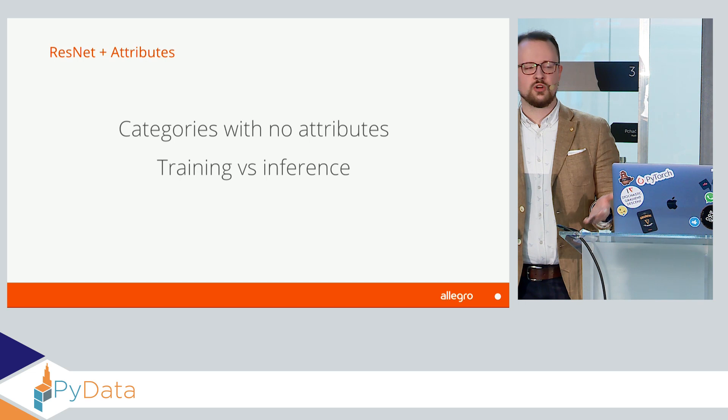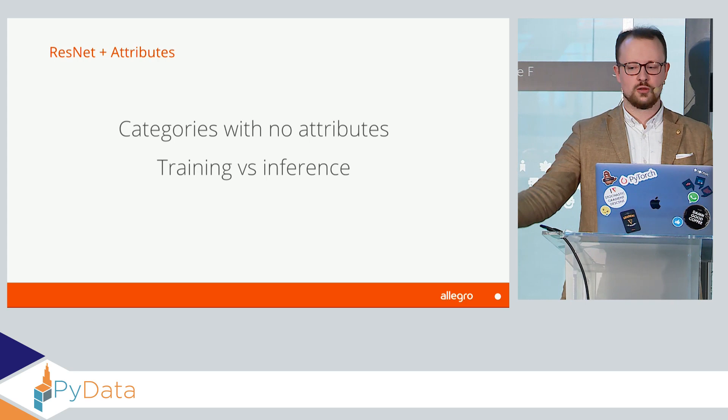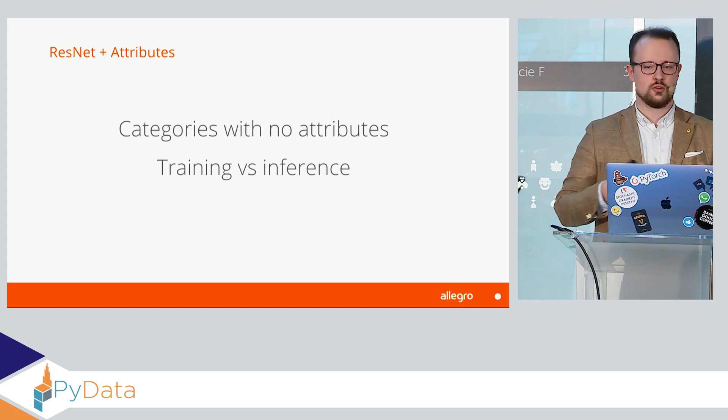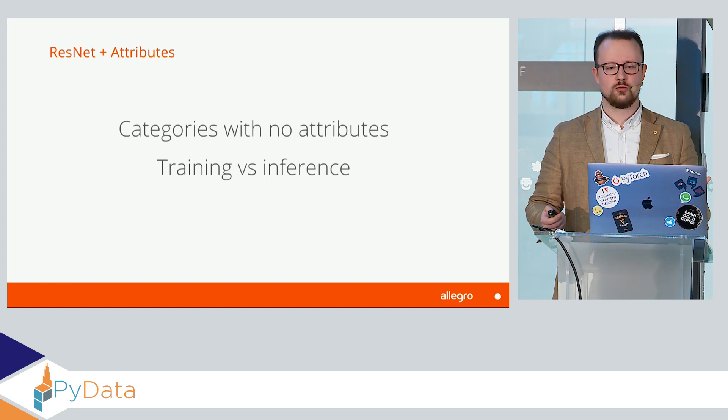Also, we're not controlling what we are learning. We're basically telling our network: could you predict these attributes? And then we're using the representation to find similar images. This is not always possible. So maybe we can try to find some other approach that is more direct.